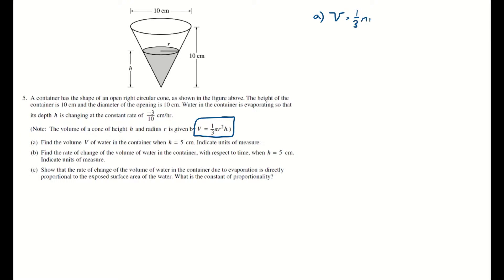So let's just plug in a few numbers. So 1/3 π r squared, the height is 5 — but what's the radius when the height is 5? When the height is 10, the radius is 5, because it's half of the diameter. But what about when the height is down to 5 cm? If you look at a side view of the cone and look at one half, you can imagine right triangles — a right triangle with a height of 10 and a top leg of 5 cm.